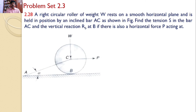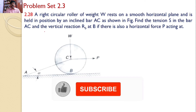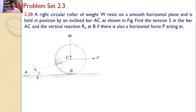In this tutorial, we will discuss Problem Set 2.3, Problem No. 2.28. A right circular roller of weight W rests on a smooth horizontal plane and is held in position by an inclined bar AC as shown in the figure. Find the tension S in the bar AC and the vertical reaction RB at B if there is also a horizontal force P acting on it.